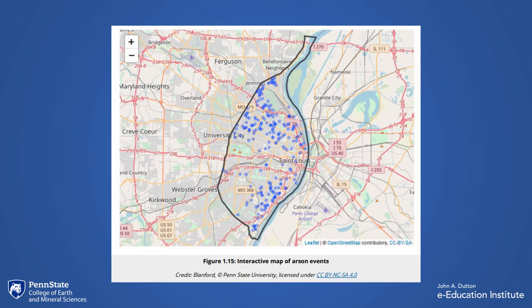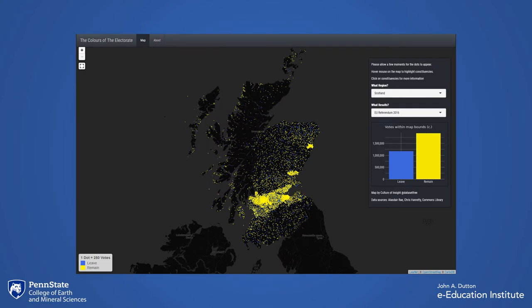If your data set contains geographical coordinates, R Shiny can be used to plot that data on a map. This map shows a series of arson events in a fictitious town of St. Louis, and this map shows the Brexit vote in Scotland.